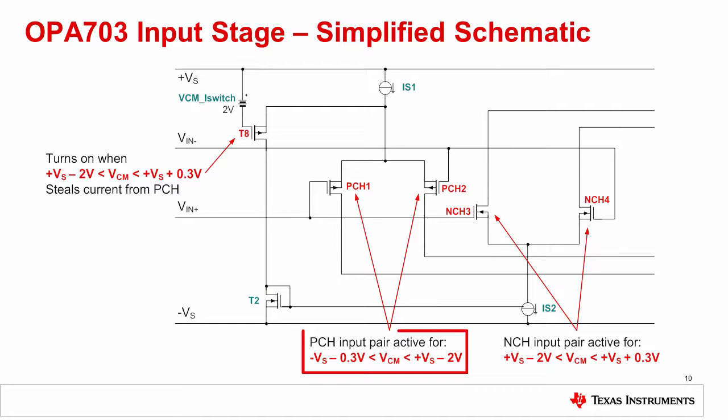For the lower common mode range, the p-channel pair is biased. When the common mode voltage is about 2 volts from the positive rail, T8 diverts current from the p-channel input pair to the n-channel pair. For common mode voltages less than 2 volts from the positive rail, the n-channel pair is biased.